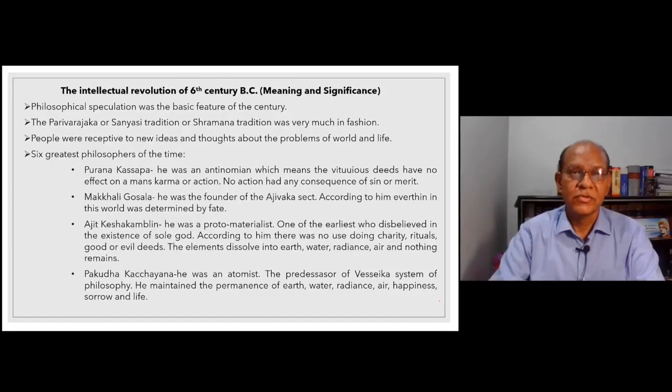Hello and welcome to this new video. The topic is Intellectual Revolution of the 6th century BC: its meaning and significance. The 6th century BC was a century of philosophical or intellectual speculation on a large scale. There were many teachers who moved around with their disciples in the form of sramana or monks or sanyasis, involving themselves in philosophical speculation or discussion.